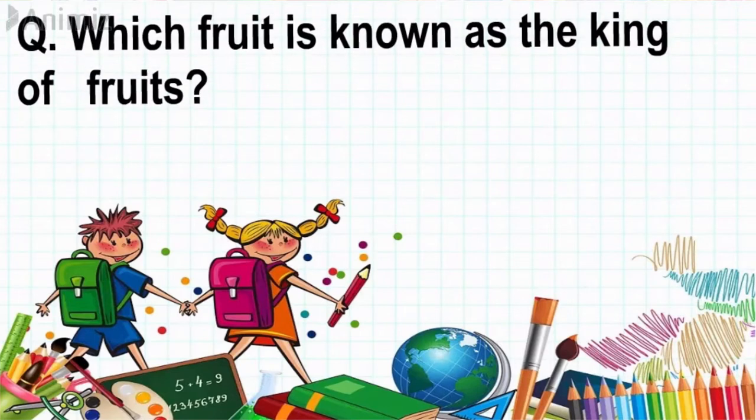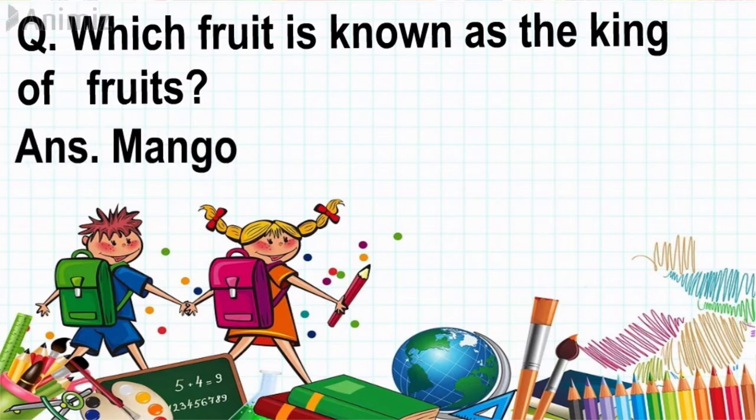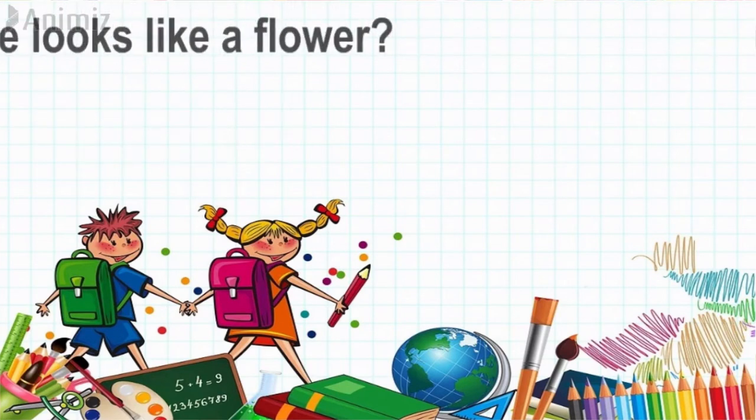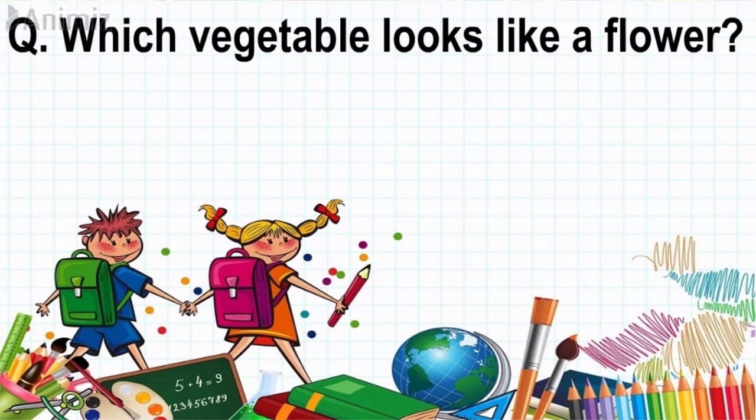Question: Which fruit is known as the king of fruits? Answer: Mango. Question: Which vegetable looks like a flower? Answer: Cauliflower.